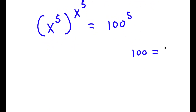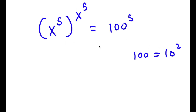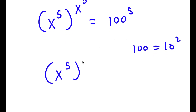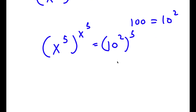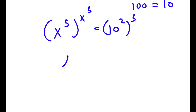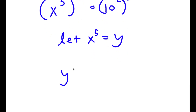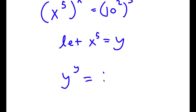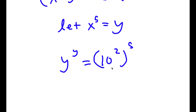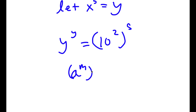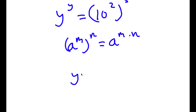Now, 100 is the same thing as 10 squared. So if I replace 100 with 10 squared, I get x to the power of 5 to the power of x to the power of 5, is equal to 10 squared to the power of 5. Now I'm going to let x to the power of 5 equal the variable y, so I get y to the power of y is equal to 10 to the power of 2 to the power of 5. Using the exponent rule, that's 10 to the power of 10, because 2 times 5 is 10.